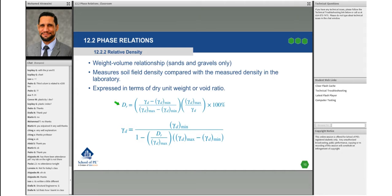It's nothing more than a weight-volume relationship for sands and gravels - typically for granular material or coarse-grained material. It measures the soil field density compared with the measured density in the lab. That's why we say relative density. It's always expressed in this equation which is Dr, relative density.